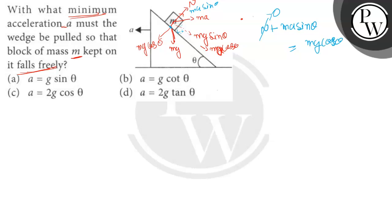then N goes to zero. So ma sin theta equals mg cos theta. In that case, m cancels out, and we find the acceleration: a equals g cos theta by sin theta.